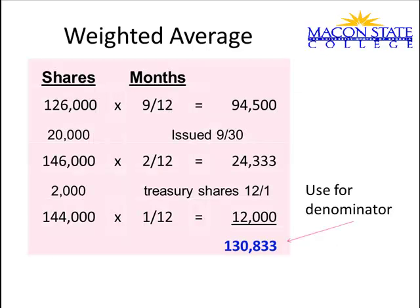Let's have a look at what this looks like. This particular firm had two changes during the year. They issued some additional shares at the end of September, and then they bought back some shares on the 1st of December. So for the first nine months of the year there were 126,000 shares outstanding, multiplied by 9/12. Then it shifted for two months to 146,000, and then down for the final month to 144,000. The weighted average common shares would be 94,500 plus 24,333 plus 12,000, giving 130,833 as the denominator for basic earnings per share.